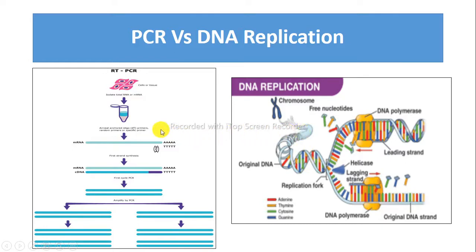Taq polymerase is not feature rich and also has no proofreading ability, whereas DNA polymerase has high fidelity, speed, proofreading, and also repair.